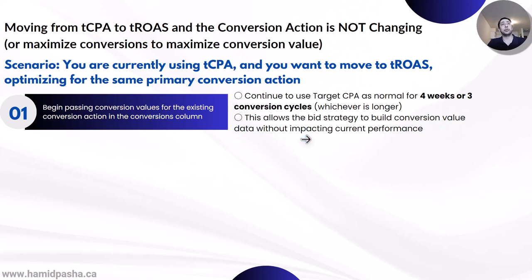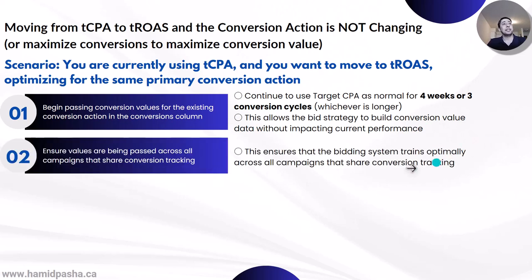This step will allow the bid strategy to build conversion value data without impacting the current performance. The target CPA that you are using does not utilize the new data in the conversion value column yet — it will just populate data to get historical data before your switch. In the second step, make sure the values are being passed across all campaigns that share conversion tracking, whether at account or MCC level, even if only planning to test a few campaigns on target ROAS. This will ensure that the bidding system trains optimally across all campaigns that share conversion tracking.